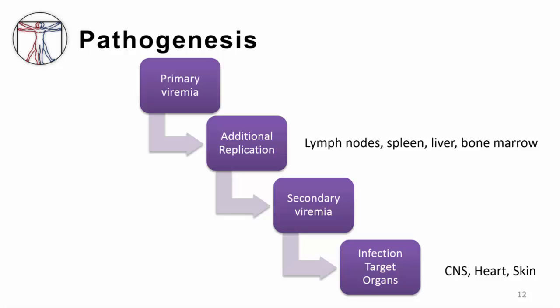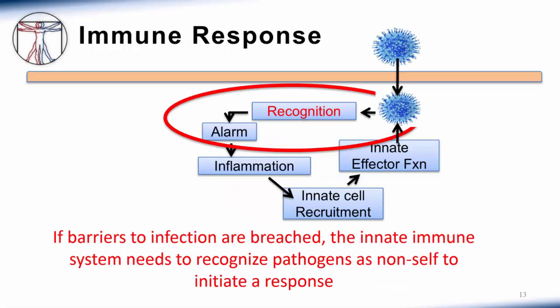Once the virus replicates in the submucosal lymphoid tissue, there is primary viremia with additional replication in the lymph nodes, spleen, liver, and bone marrow. This is followed by secondary viremia and infection of additional organs like the central nervous system, heart, and skin. Now let's talk about the immune response to enterovirus so we can link viral pathogenesis, the immune response, and clinical manifestations.